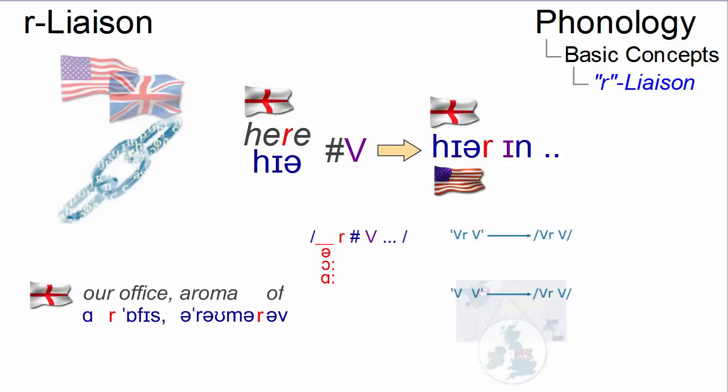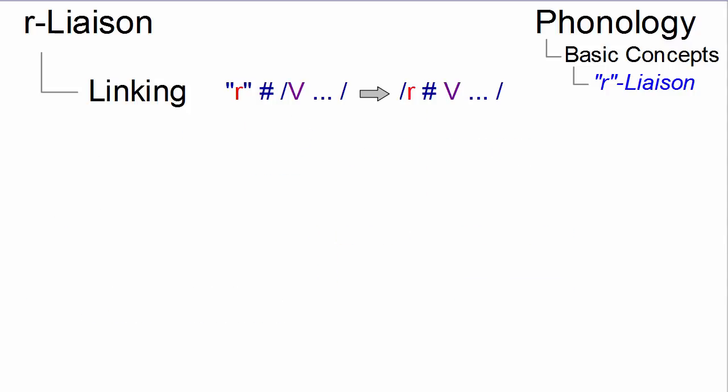In present-day English, there are two variants of R-liaison. In the case of linking, an orthographically present R is pronounced between two words when the second word starts with a vowel.